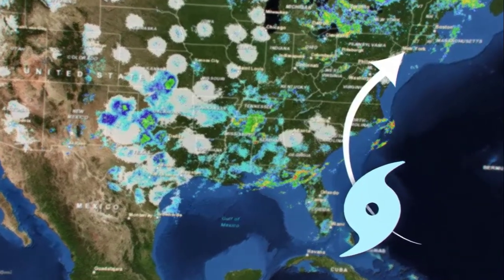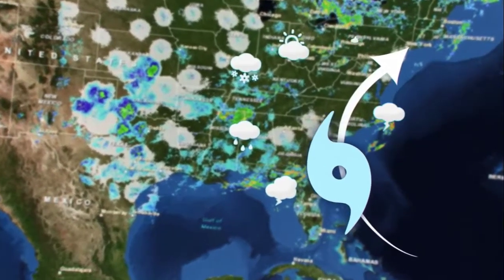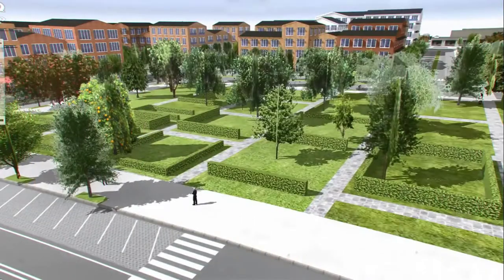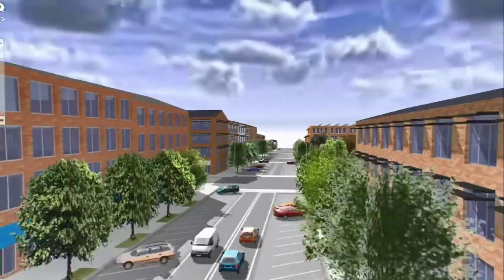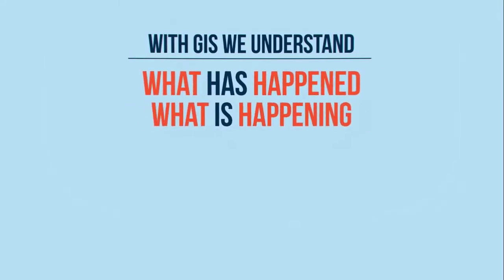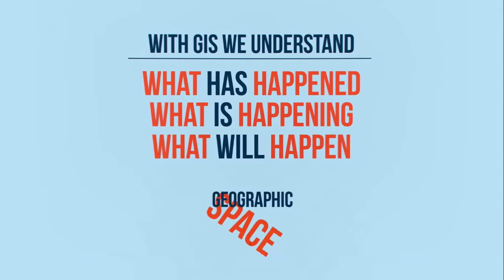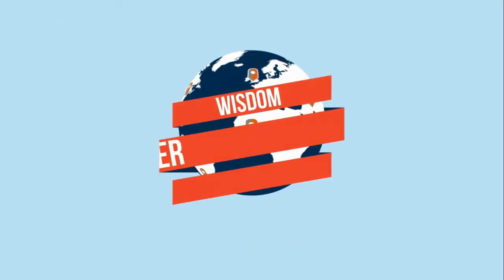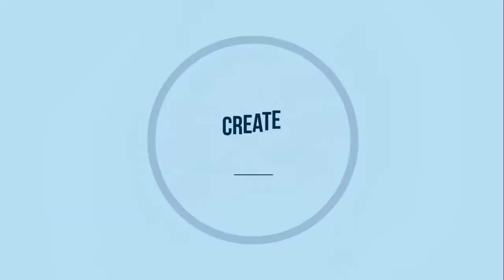For example, a meteorologist might study the paths of hurricanes to predict where and when they might occur in the future. A city planner can choose the best location for a new park or hospital, ensuring they are built where they're needed most. GIS is essential to understanding what has happened, what is happening, and what will happen in geographic space. Geographic understanding brings wisdom, and with wisdom we can make better decisions to create a brighter future.